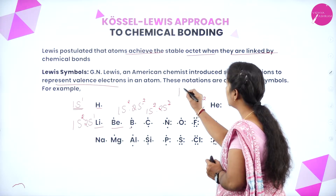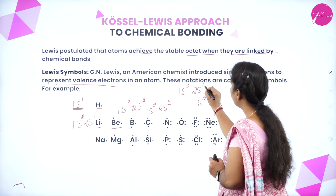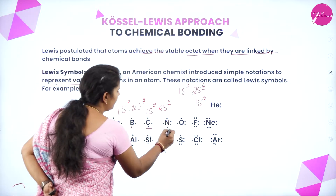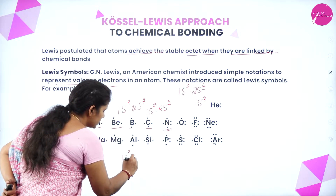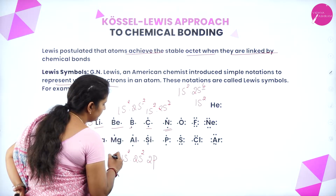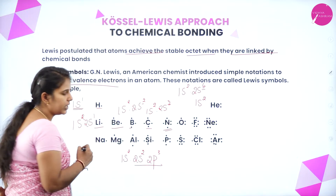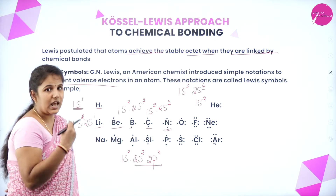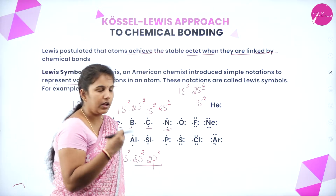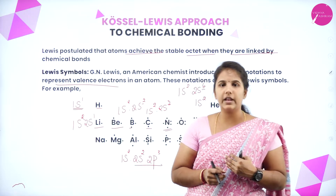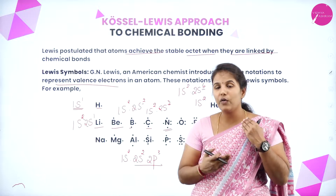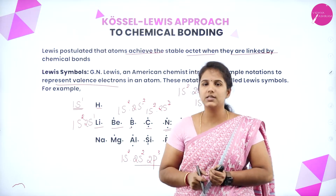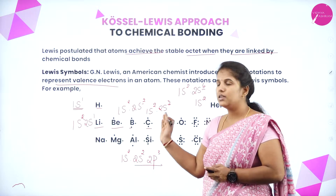Similarly, for carbon with configuration 1s2 2s2 2p2, there are 4 electrons in the outermost shell. For nitrogen with 1s2 2s2 2p3, there are five electrons in the 2s and 2p shells. For oxygen, six unpaired electrons; for fluorine, seven; and for neon, ten electrons in its outermost shell. This is the way of representing elements using the dotted structure given by Lewis, known as the Lewis dot structure.